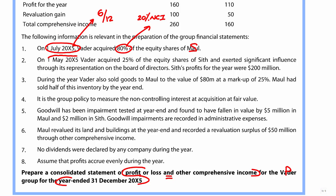On the 1st of May 20x5, we acquired 25% of the equity shares of SIF and exerted significant influence through representation on the board of directors. So SIF must be an associate that will equity account in the statement of profit or loss. We'll take our share of the profits for the year, but from the 1st of May 20x5 to the end of December, that's eight months, eight twelfths.